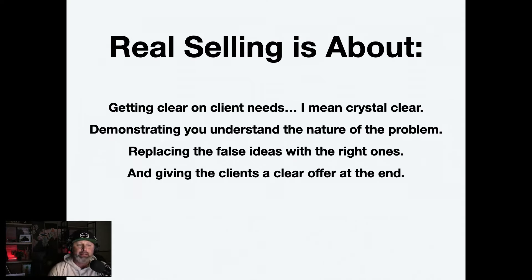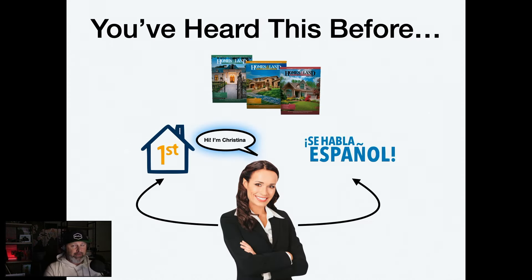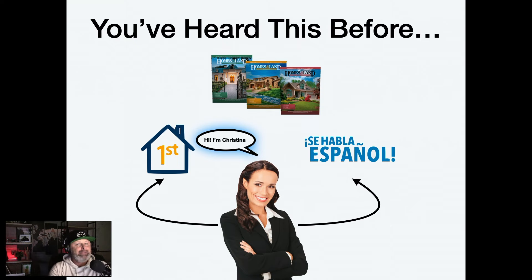And giving clients a clear offer at the end. The key word there is clear — not a whole bunch of different offers, a clear, concise offer. If you've watched this channel and saw my 'give me 30 minutes and I will work a sales miracle in your agency' video, you've already heard this story. I'll link it right here so you can go back and watch that. If you have not seen that video, it really will be the foundation of this sales script.